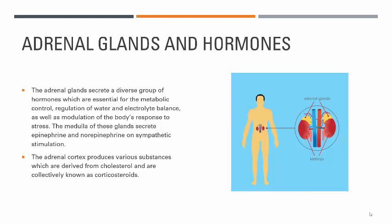Adrenal glands secrete a diverse group of hormones, and those are required for metabolic control, for the regulation of water and electrolyte balance, as well as modulation of the body's response to stress. The medulla of adrenal glands secretes epinephrine and norepinephrine, also known as adrenaline and noradrenaline, and these hormones are secreted when the glands are stimulated by the sympathetic nervous system.